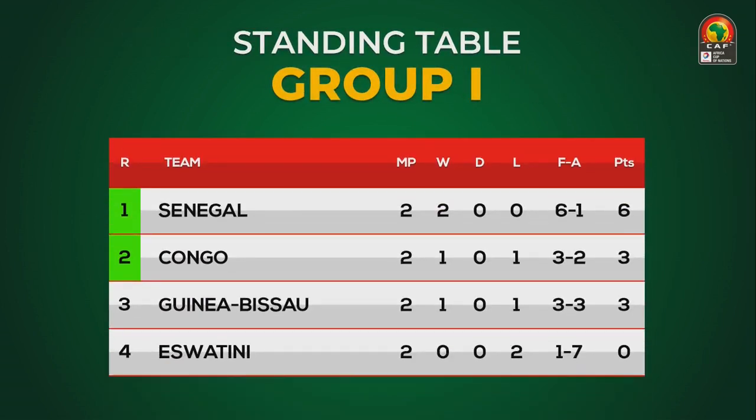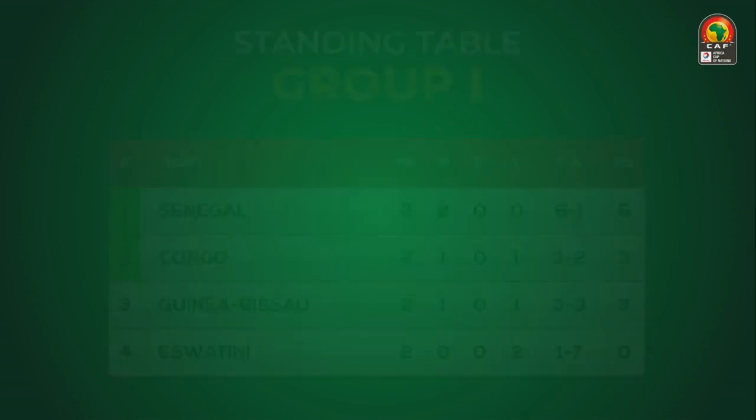In group I, the top of the table is Senegal, followed by Congo in second, Guinea-Bissau and Eswatini below it.